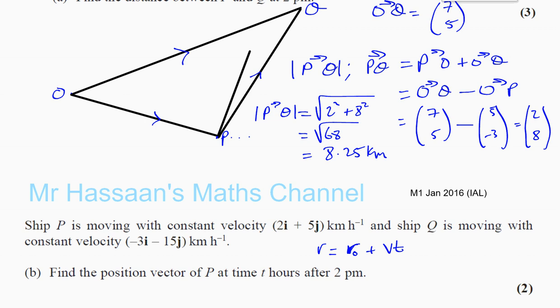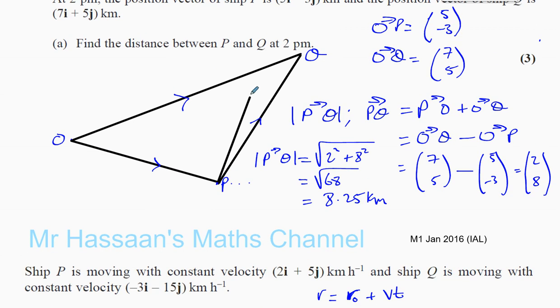That means after 1 hour when t equals 1, it's going to be there, and then when t equals 2, it's going to be there, because it's going in that direction and it's moving that much every hour. So you want to have a general equation which will help you find out its position at any time, like when t equals 5, when t equals 10, and so on. Let's work out how to do that now.